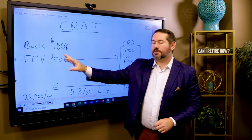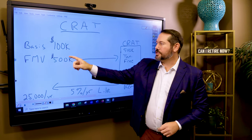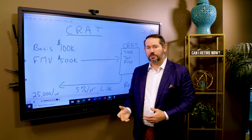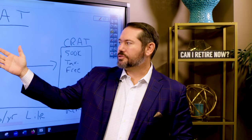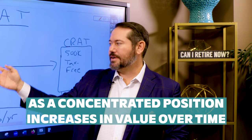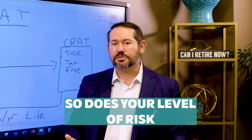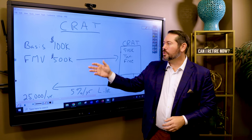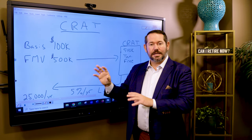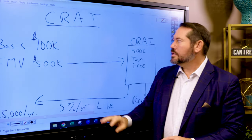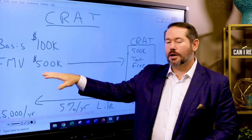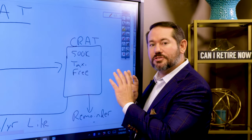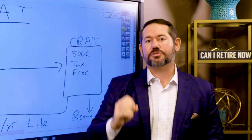The first is the CRAT. We have stock that has appreciated in value — we purchased it for $100,000 and it's grown to $500,000. As a concentrated position increases in value, so does your level of risk, so we probably have too much money in one particular company. The charitable remainder trust can be a good income-providing and tax planning strategy, and it can also help you reduce risk. The basic concept: we take the $500,000 and deposit it into the charitable remainder trust, then sell that stock and pay zero percent capital gains tax, because it is a charitable trust.